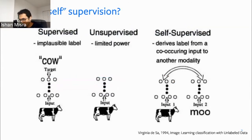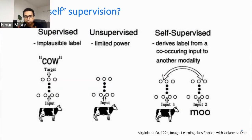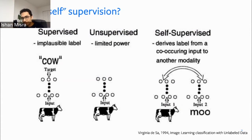On nomenclature: the earliest reference I can find for the term 'self-supervised learning' is from 1994, from Virginia de Sa's thesis. She very clearly distinguished between unsupervised learning and self-supervised learning — for her, self-supervised learning was more about looking at different modalities, for example correlating the sound a cow makes with the visual input of the cow. Since about 2015, most people use self-supervised and unsupervised rather interchangeably.